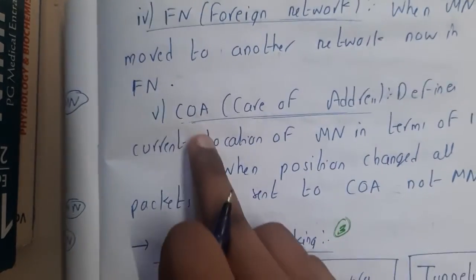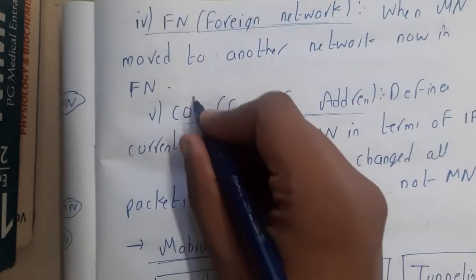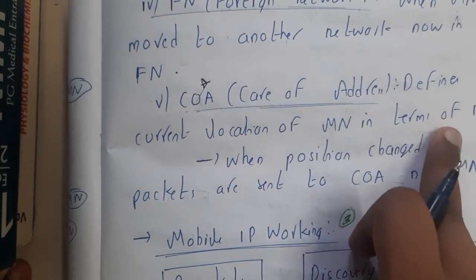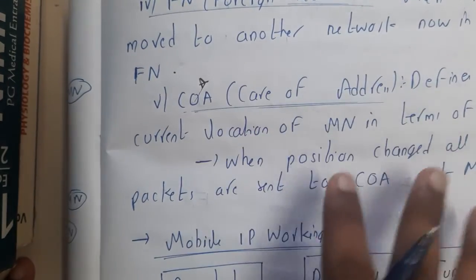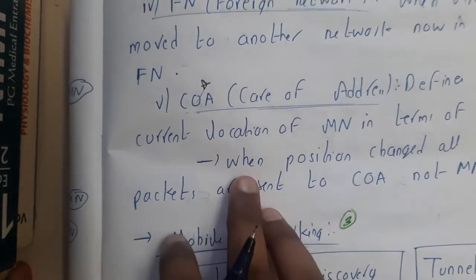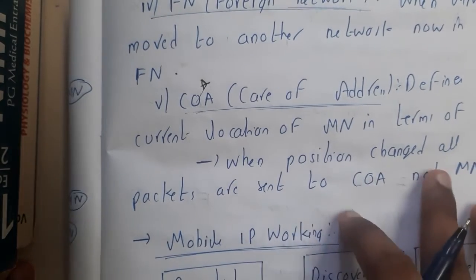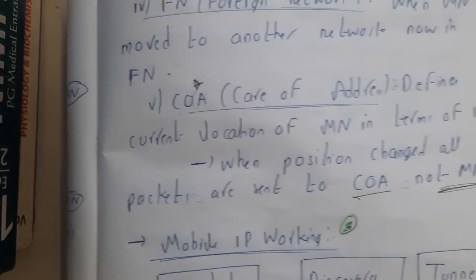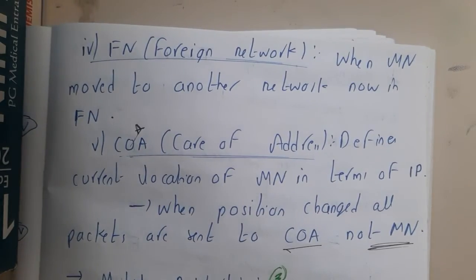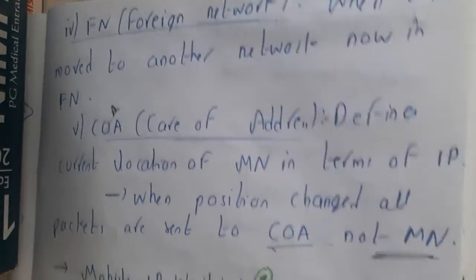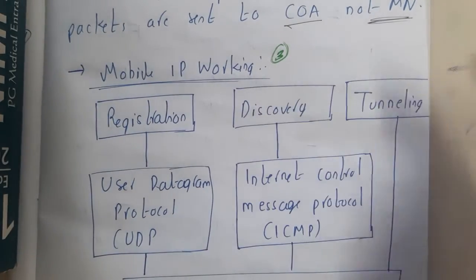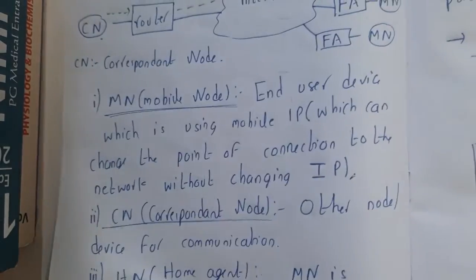Similarly, the foreign agent is the network where MN has moved to another location. And the most important concept — COA, the Care of Address — defines the current location of the MN in terms of IP. We store the IP address in COA, and when the position changes, all packets are sent to the COA rather than directly to the mobile. In the next lecture we'll discuss the exact flow and working of Mobile IP.